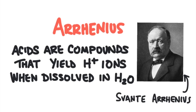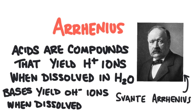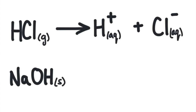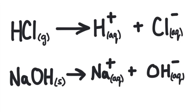The Arrhenius definition states that acids are compounds that will yield hydrogen ions — we call these protons — when dissolved in water, and bases are compounds that will yield hydroxide ions when dissolved in water. Hydrochloric acid, HCl, is an acid according to this definition because when placed in water, it dissociates to give hydrogen ions and chloride ions. It is the hydrogen ions that are the acid part. Sodium hydroxide is a base because when placed in water, it dissociates to give hydroxide ions and sodium ions.